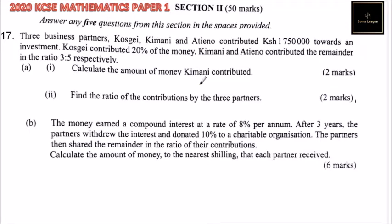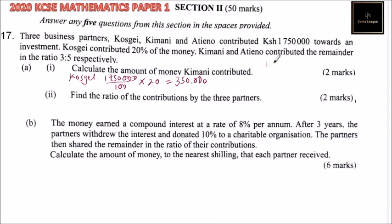Part A, Roman numeral one: calculate the amount of money Kemani contributed. We start with Kosige. Kosige contributed 20%, so we calculate 1,750,000 divided by 100 multiplied by 20. Using your calculator, you will find this equals 350,000. That is what Kosige contributed. So we get the remainder: 1,750,000 subtract 350,000.